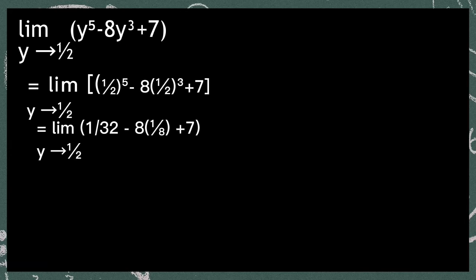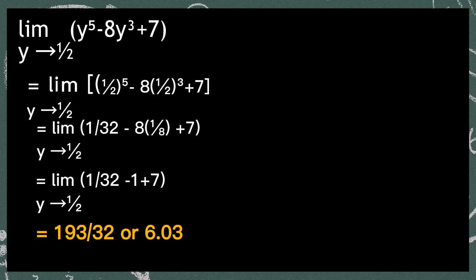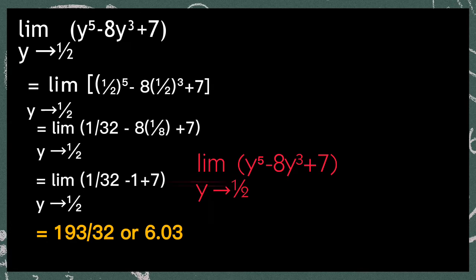And 8 times 1/8 is equal to 1. So the limit of 1/32 minus 1 plus 7 is equal to 193/32 or 6.03. So the limit of y raised to 5 minus 8y raised to 3 plus 7, as y approaches 1/2, is equal to 193/32 or 6.03.